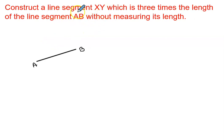Okay, so in this question, we are supposed to construct line segment XY which is three times the length of the line segment AB without measuring its length.